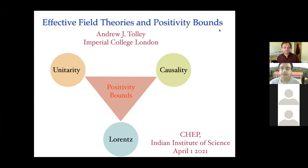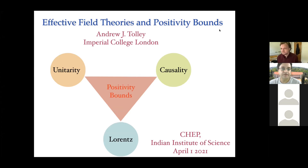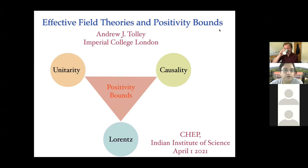Welcome everybody. We are very happy to have Andrew Tolley from Imperial College London, who is going to tell us about effective field theories and positivity bounds. Andrew did his PhD at Cambridge University under the supervision of Neil Turok, and worked in cosmology, gravitational physics, and recently has done some very impressive work in quantum effective field theories.